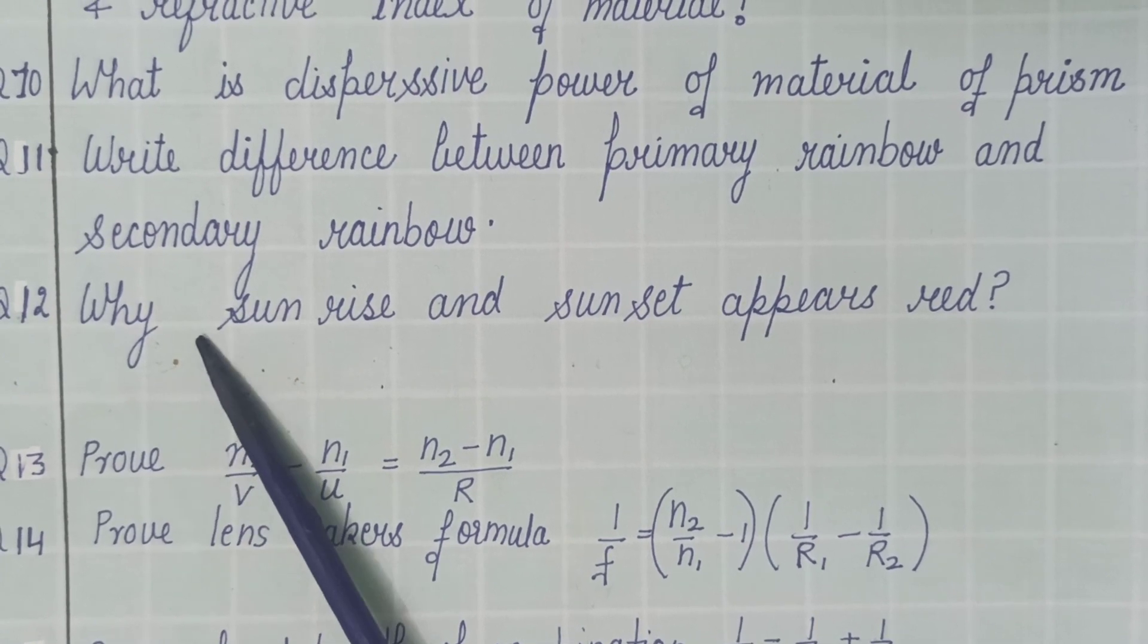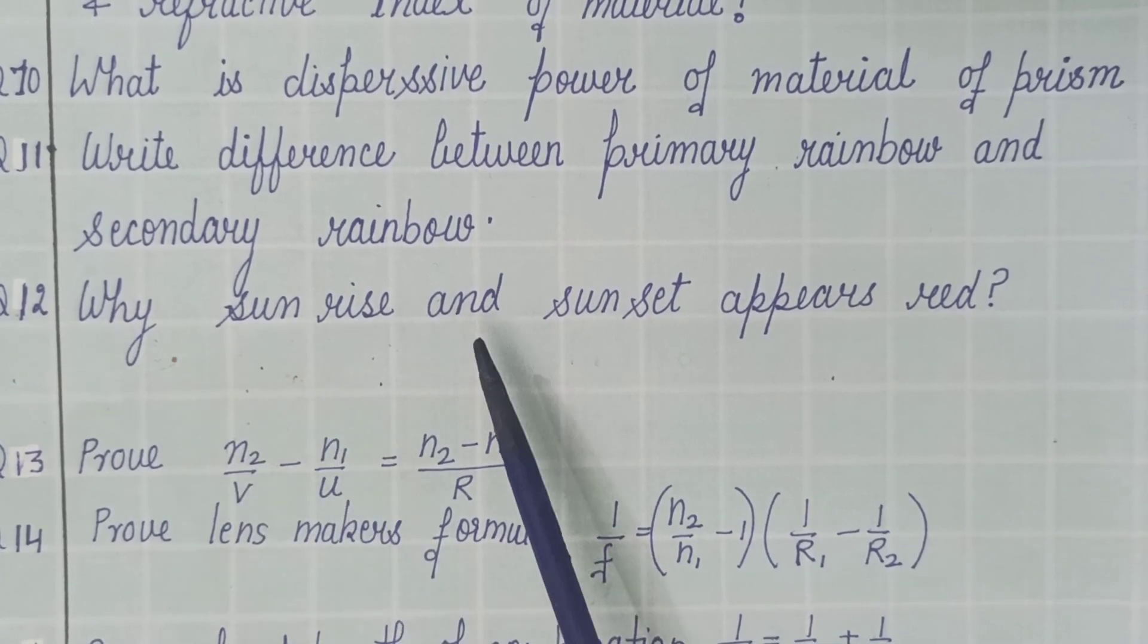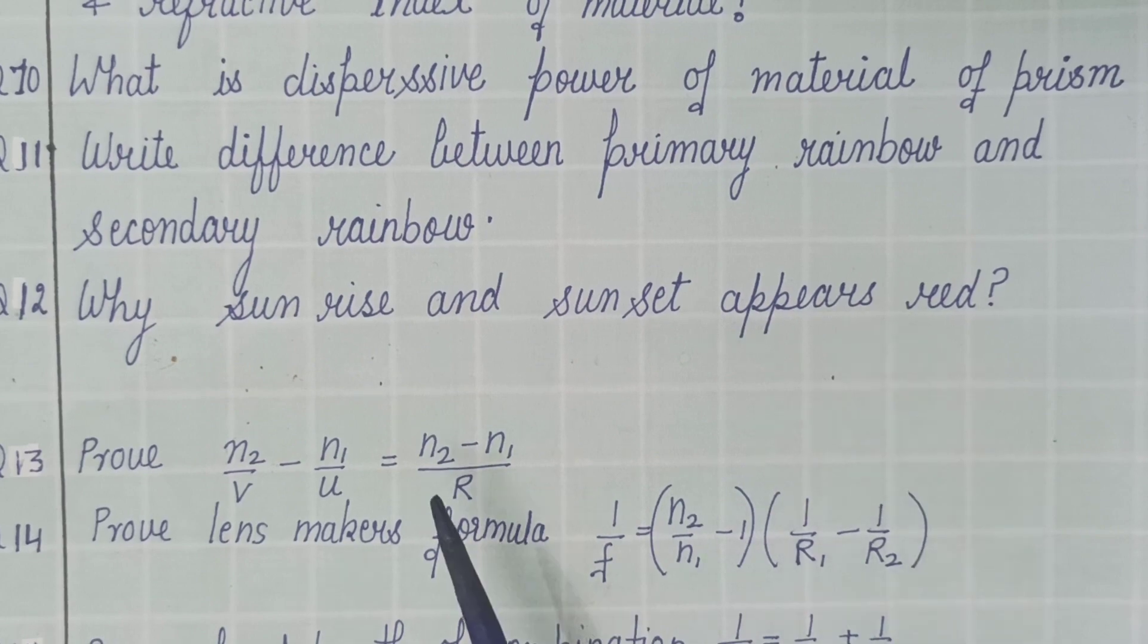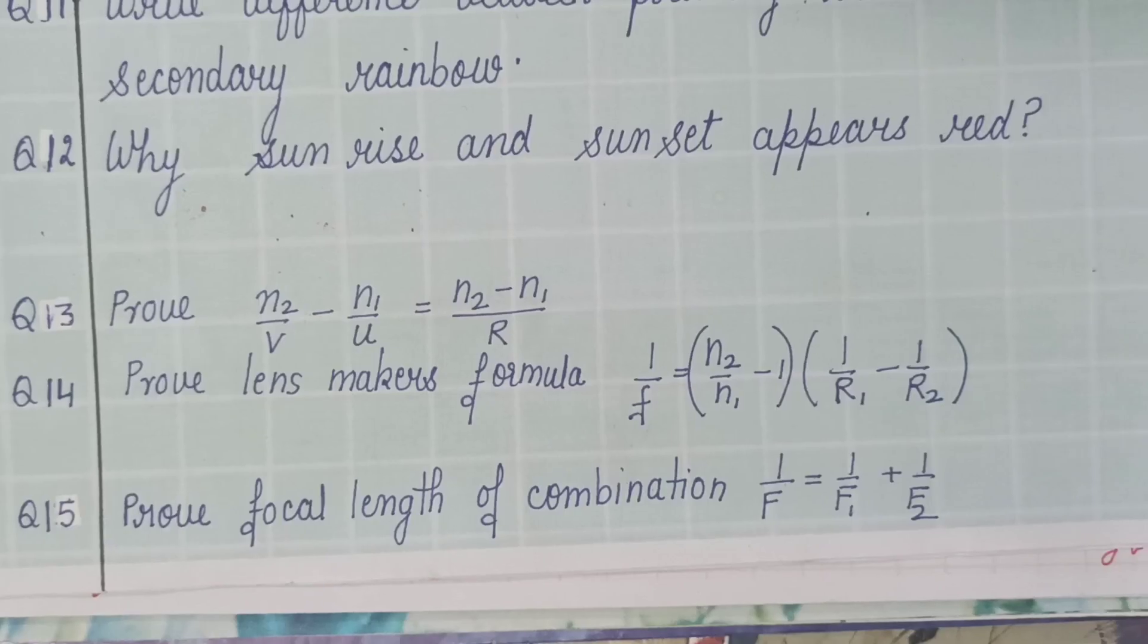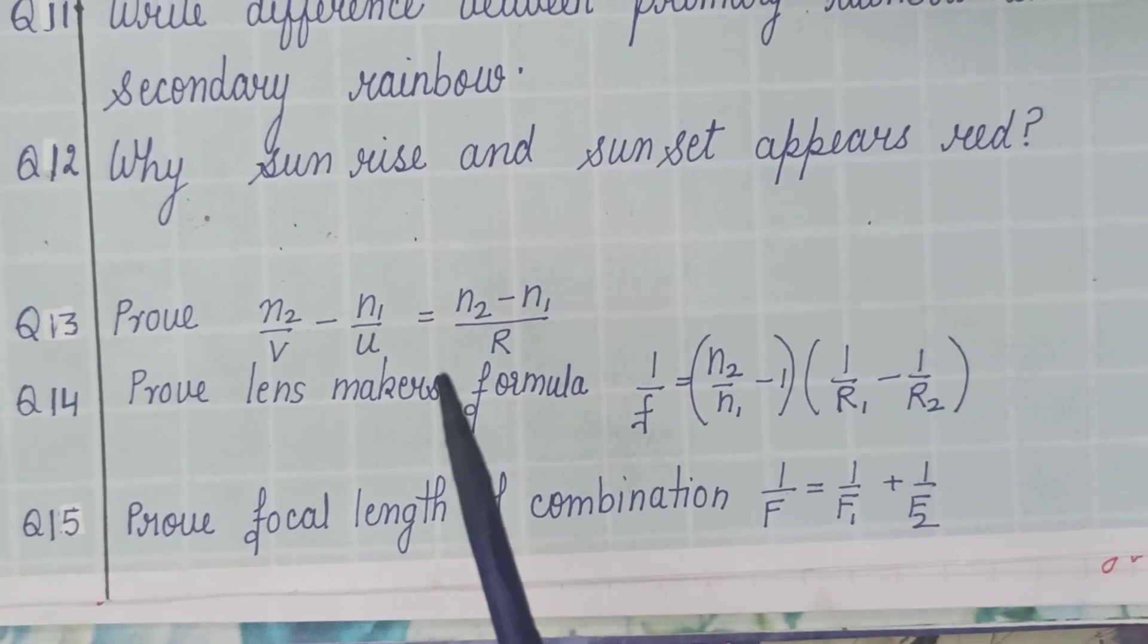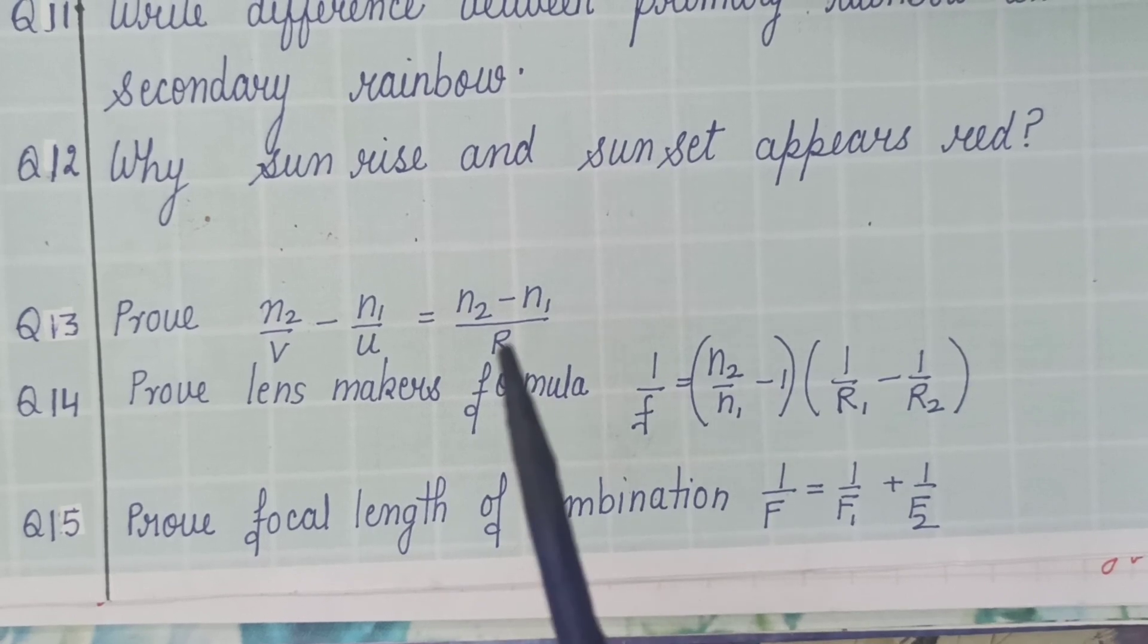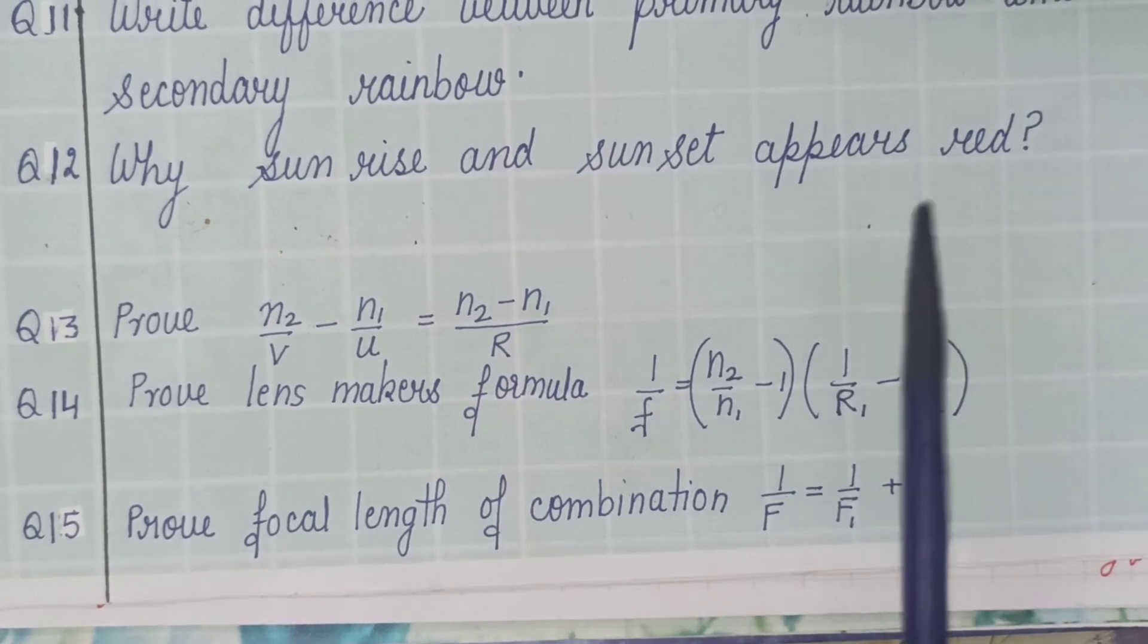So this is also important this year. Why sunrise and sunset appear red? After that, I will move to important questions based on refraction through curved surface. That means refraction through lenses.